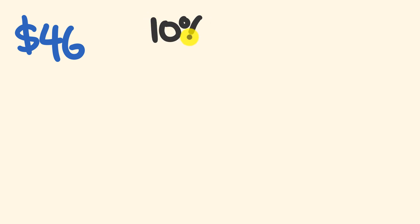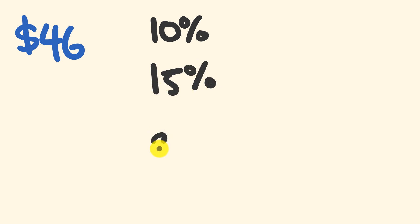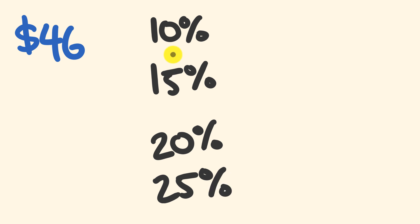G'day, welcome to the Tech Math channel. In this video I'm going to be giving you some tips on how to simply and easily work out tips at the end of a meal. Let's give a bill of $46 and work out a couple of different tips: a low end tip of 10%, a standard tip of 15%, then a bigger tip of 20%, and an even bigger tip of 25%.